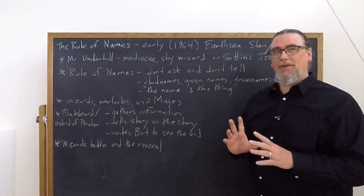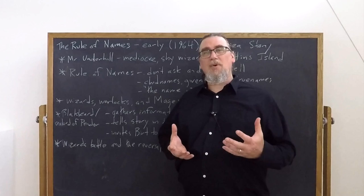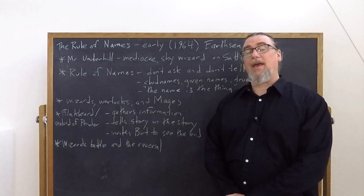Ursula K. Le Guin's short story The Rule of Names is set within the Earthsea narrative universe that she's going to build out over decades, and there are a number of important key themes that are going to show up in the novels.